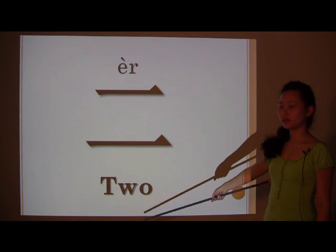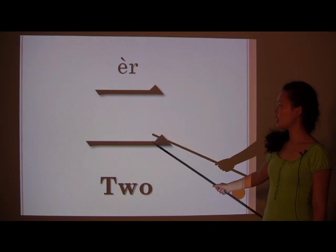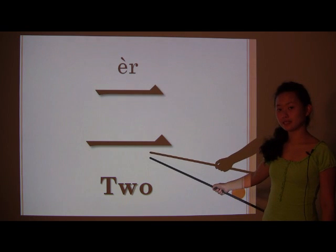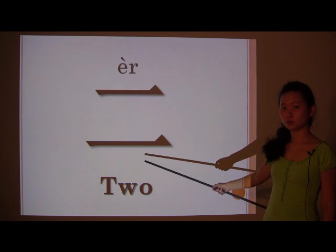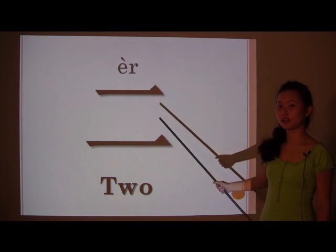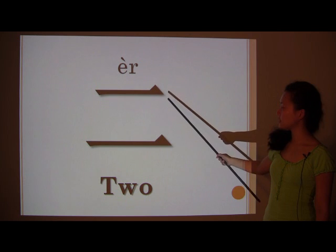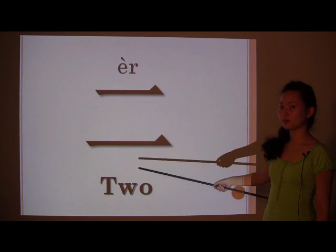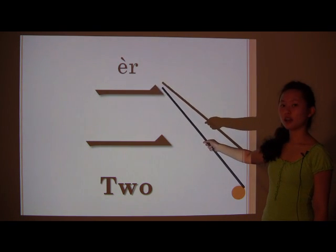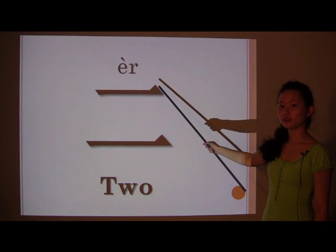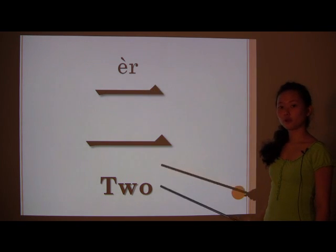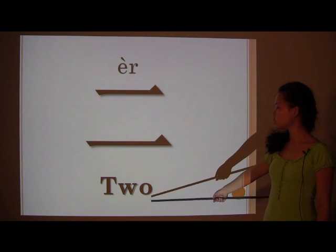2 is 二 (ER). It looks really similar to 1, but there are 2 horizontal lines. The first one is slightly shorter. And you pronounce it ER. ER for 2.